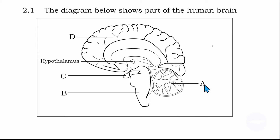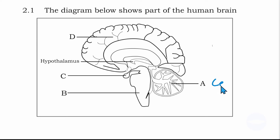Number A is the cerebellum. The cerebellum is this part at the back. It is the second largest part of the brain. So number A is the cerebellum.